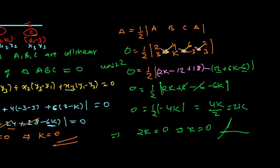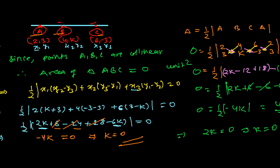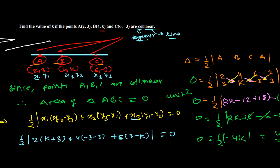I hope you understand what collinear means and how to find the area. In previous videos we also solved collinearity problems using the distance formula and the section formula. Here we used the triangle area concept: if the area of the triangle is 0, the points are collinear; if the area is not 0, the points are not collinear. I hope you understand the concept — see you in the next video. Don't forget to subscribe the channel!